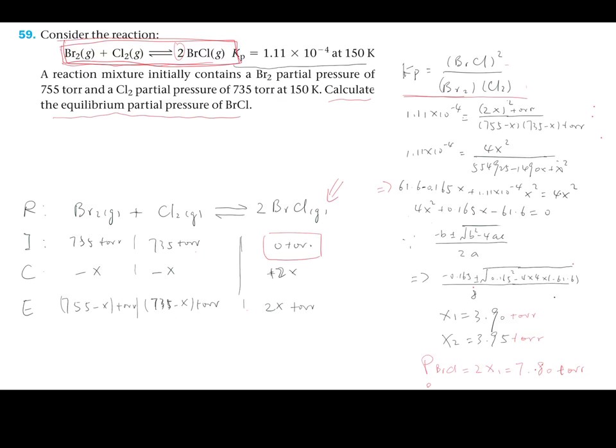Here's the question. There's a reaction given and an equilibrium constant of partial pressure (Kp) given as well. A reaction mixture initially contained a bromine partial pressure of 755 torr and a chlorine partial pressure of 735 torr at 150 kelvins. Calculate the equilibrium partial pressure of bromine monochloride (BrCl).